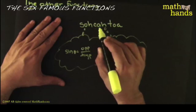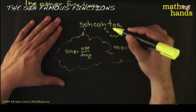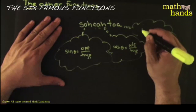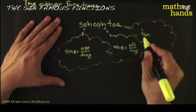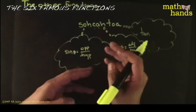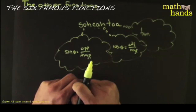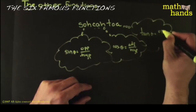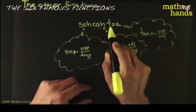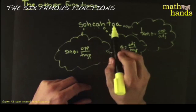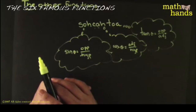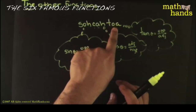Now it's time to introduce a new one: the tangent. We write it TAN, pronounced tangent. The tangent function works similarly — you draw the reference triangle, label the sides, and pick a ratio. Tangent picks up the ratio opposite over adjacent. That's TOA. So SOH-CAH-TOA: sine is opposite over hypotenuse, cosine is adjacent over hypotenuse, tangent is opposite over adjacent.